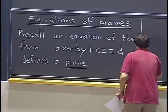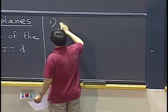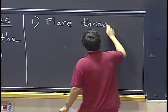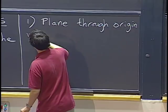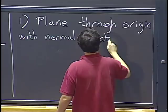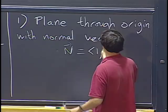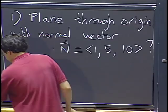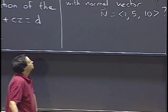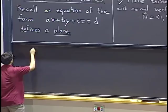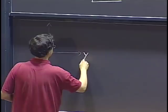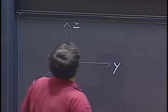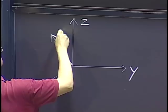Let's start with an example. We want to find an equation for a plane through the origin with normal vector n equals (1, 5, 10). How do we find an equation of this plane? We can get that equation by thinking geometrically. We have the x, y, z axes, and we have this vector n = (1, 5, 10), which is supposed to be perpendicular to our plane, and our plane passes through the origin.